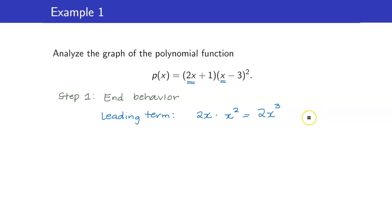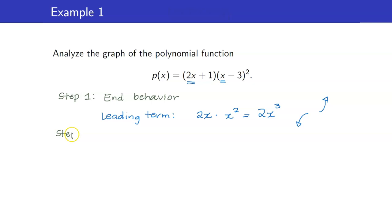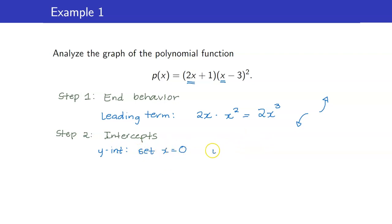The exponent is odd with a positive leading coefficient. Therefore, the end behavior is just like that of x cubed, which is down, up. Next, we determine the x and y-intercepts. For our y-intercept, we set x to 0, and we get that y is equal to 9.